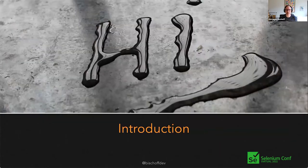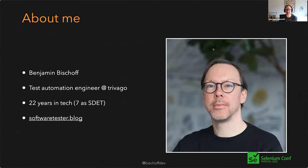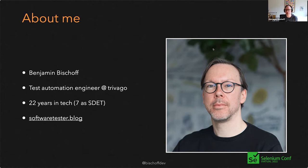That's me. Thanks again for the introduction — Benjamin Bischoff, that's my name. I'm a test automation engineer at Trivago. I've been working there for six years. In total, I'm 22 years in tech, 15 years as a 100% full developer, and then I transitioned gradually into the world of testing. Now you could call me a software development engineer in test. I write articles on my website, softwaretester.blog, in case you're interested.